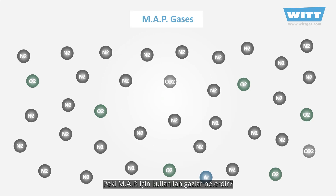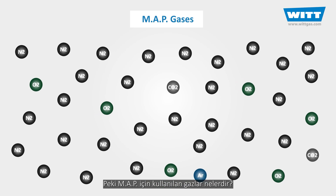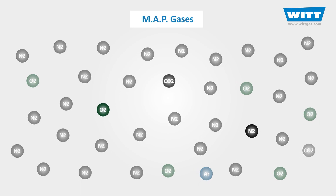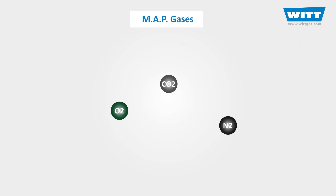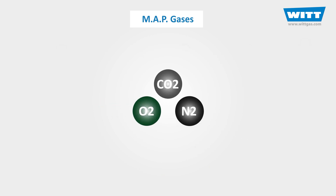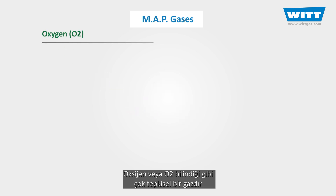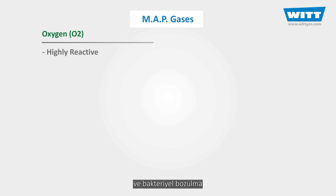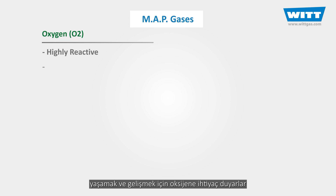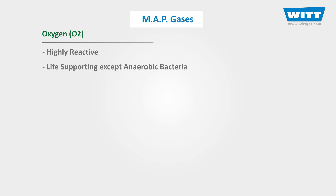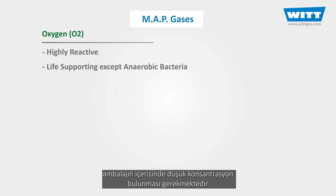So what are these gases we use for MAP? All of these come from the air. The first one is oxygen. Oxygen, or O2, is highly reactive and most of the common spoilage bacteria, fungi, and chemical and biological reactions require oxygen to live and grow. Therefore, to increase the shelf life of most foods, the pack atmosphere should contain a low concentration of oxygen.